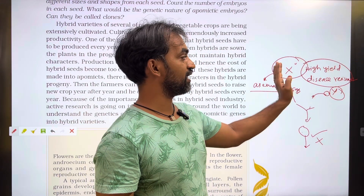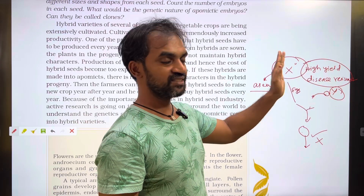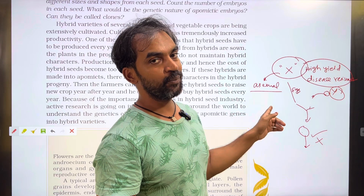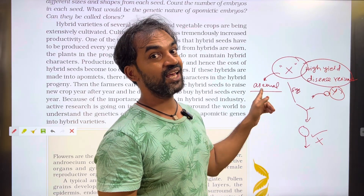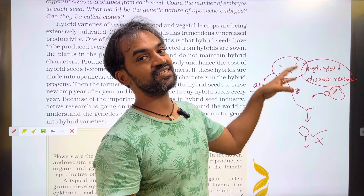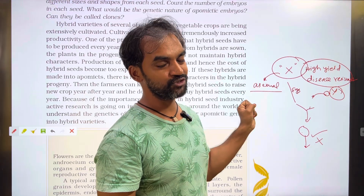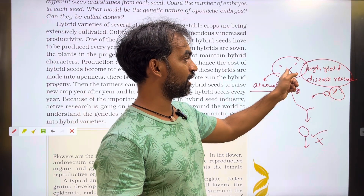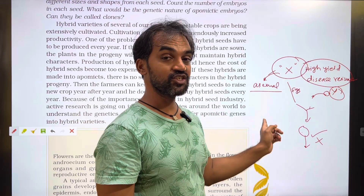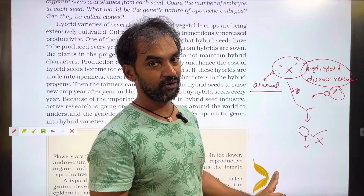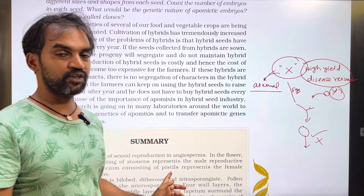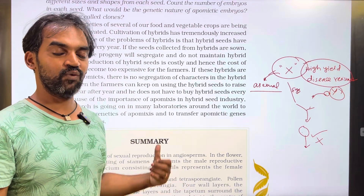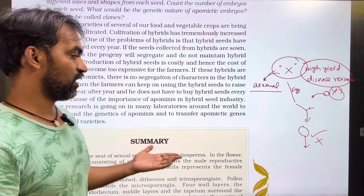Asexual reproduction involves only one parent — there is no mixing of characters, so the character is maintained 100% generation after generation. Apomixis is a seed formed without fertilization — it is asexual but mimics sexual reproduction. The seed is produced without involving another parent, and the character is maintained generation after generation. That is apomixis in hybrid varieties.